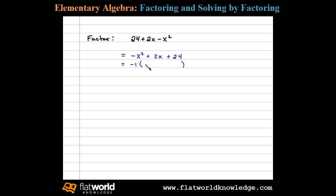Factoring out a negative 1 we'll be left with x squared minus 2x minus 24. Now we're ready to factor the resulting trinomial. If it does factor, it'll factor into the product of two binomials. The factors of x squared are x times x.